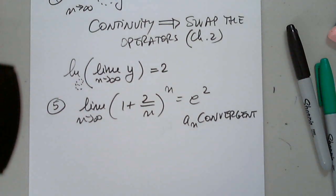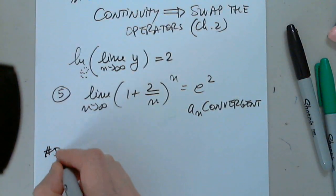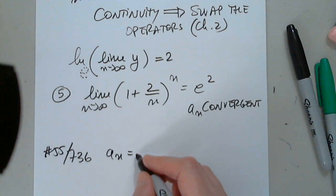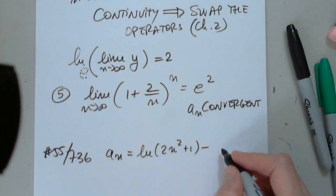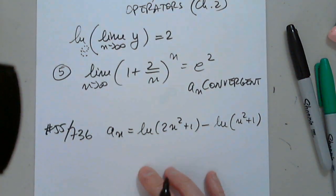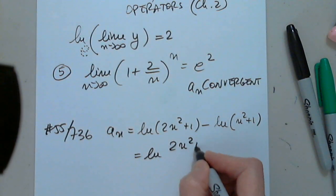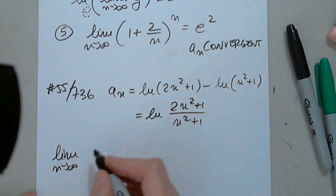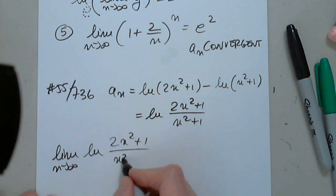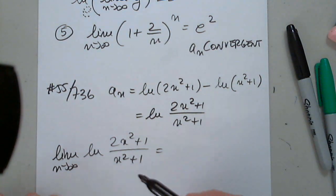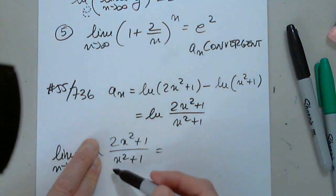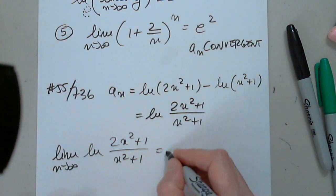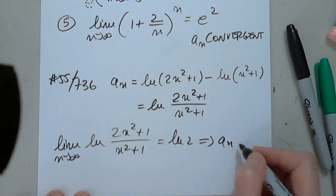Let's also look at 55 on page 736. We have a sub n equals natural log of (2n squared + 1) minus natural log of (n squared + 1). We condense this into natural log of (2n squared + 1) over (n squared + 1). Finding the limit as n approaches infinity, we apply the limit inside first. Since the numerator and denominator have the same degree, the limit of the rational expression is 2, so the result is natural log of 2. Therefore a sub n is convergent.